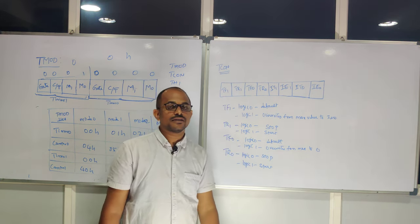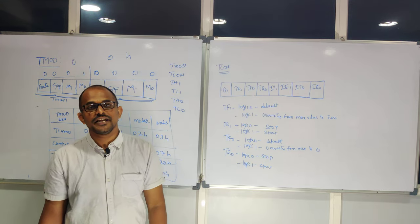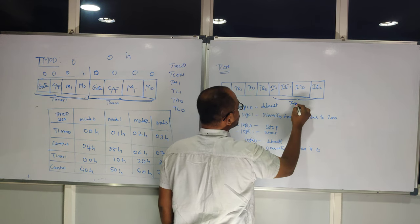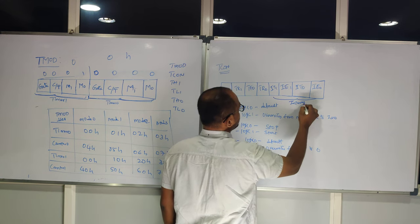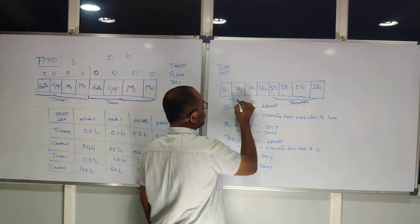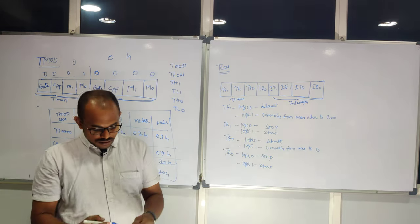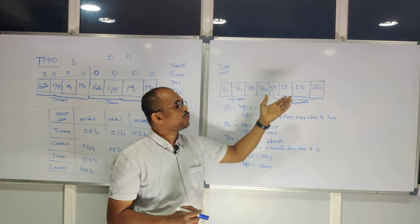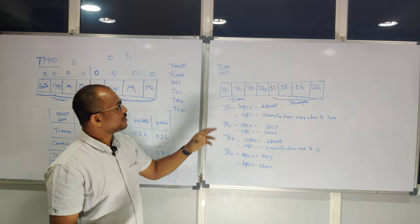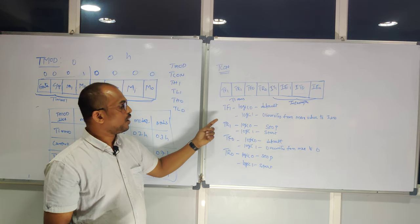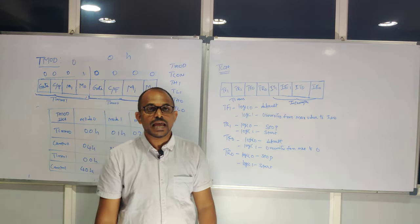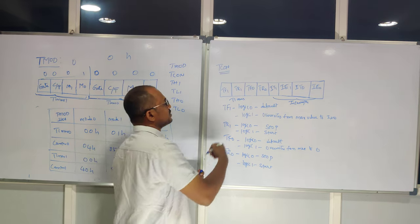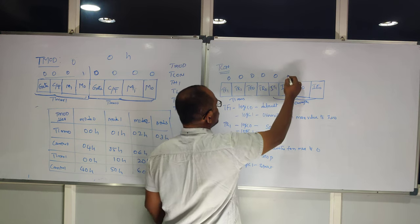Out of the 8 bits in the T-CON register, the LSB part (lower 4 bits) is dedicated to interrupts, and the MSB part (upper 4 bits) is used for timers. The timer-related bits are TF1, TR1, TF0, and TR0. Default logic for all T-CON register bits is zero.